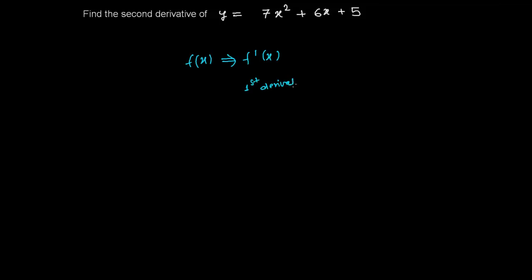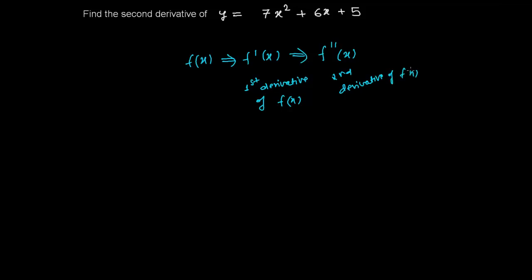First derivative of function f(x). And if you again differentiate the same function with respect to x, we write f''(x) — double prime of x. This is called the second derivative of the function f(x). That's it.